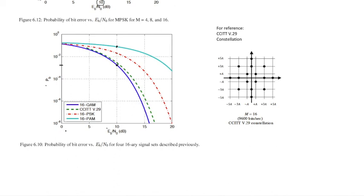And that is kind of the standard way of looking at constellations and their performance as a function of the amount of energy per bit that we send.